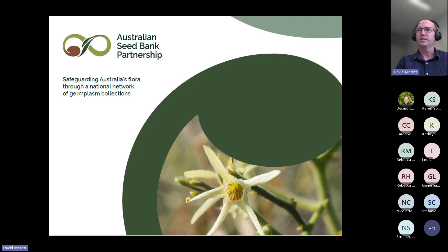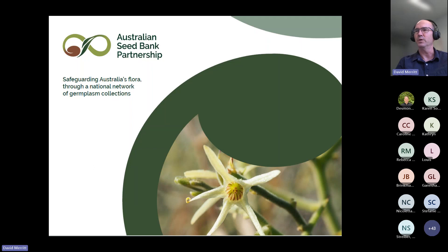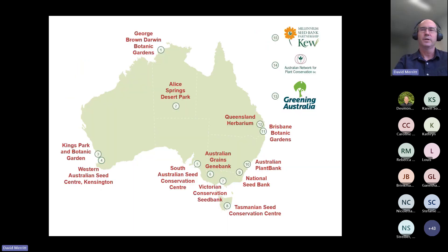To introduce the Australian Seed Bank Partnership for those who might not be familiar, it's an alliance of conservation seed banks and conservation organisations across Australia. In each state and territory we have partners, and we have some allied partners as well — non-government agencies. We are a not-for-profit environmental charity, and we work with other plant networks and international agencies. It's very much a collaborative and coordinated effort to conserve Australia's plant species by seed banking.